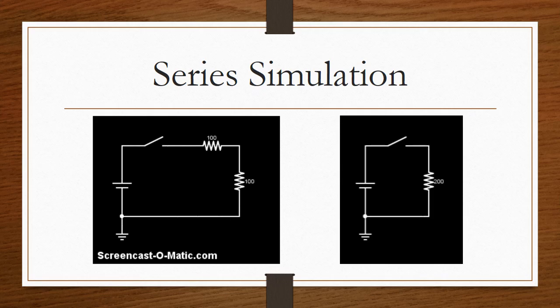We can simulate the current flowing through a series circuit. In the diagram on the left, the switch closes and allows the current to flow from the battery through each 100 ohm resistor and return to the battery. In the diagram on the right, a single 200 ohm resistor allows the same current to flow. This is called an equivalent resistance.